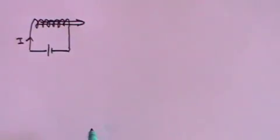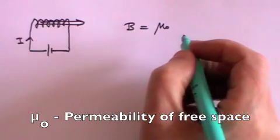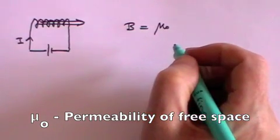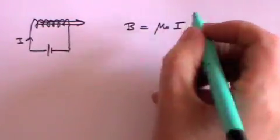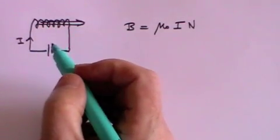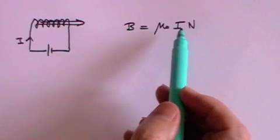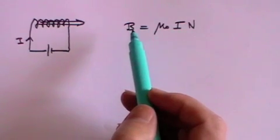So let's go back to basics and remind ourselves about what goes on. If you take a coil of wire, sometimes called a solenoid, and you pass a direct, unchanging current through that coil, then in the middle of the solenoid there will be a magnetic field. The magnetic field strength B is equal to mu zero — the permeability of free space — multiplied by the current and by the number of turns in the solenoid. So if you change the current, you change the magnetic field; if the current is steady, the magnetic field will be steady.